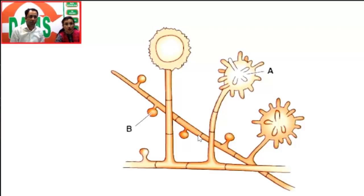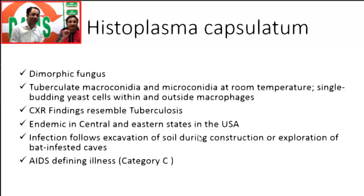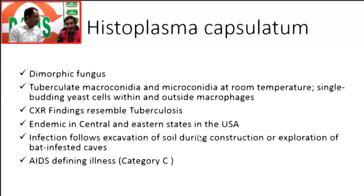This slide summarizes the septate hyphae and tuberculate macroconidia, labeled as A, and the smaller asexual spores known as microconidia, labeled as B. This morphology is appreciated when the sample is incubated at room temperature (25°C), whereas yeast forms are visible at 37°C. To summarize: the organism causing this disease is Histoplasma capsulatum. Note that 'capsulatum' is actually a misnomer — please do not be misled by the term, as this is an example of a non-capsulated fungus.